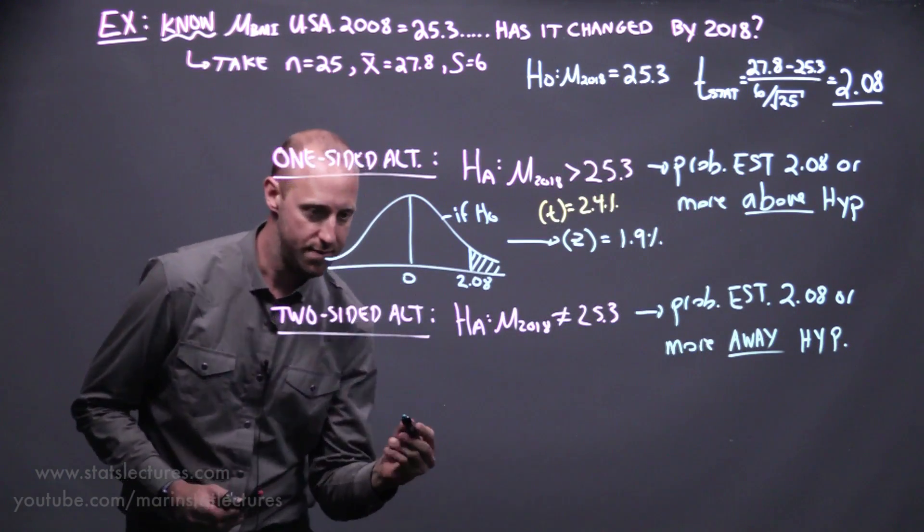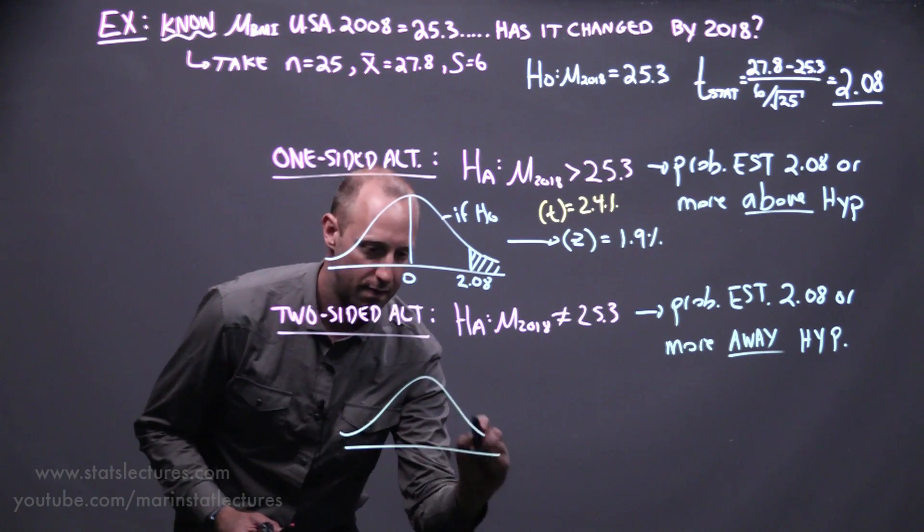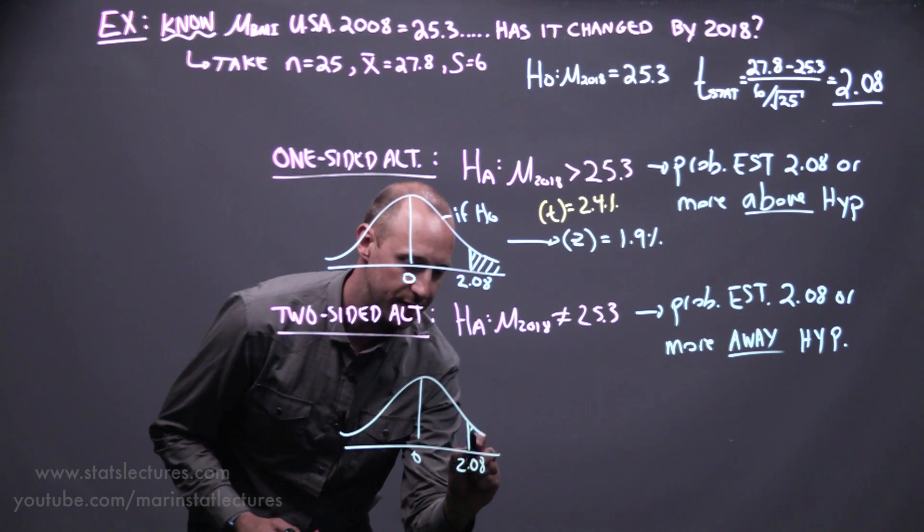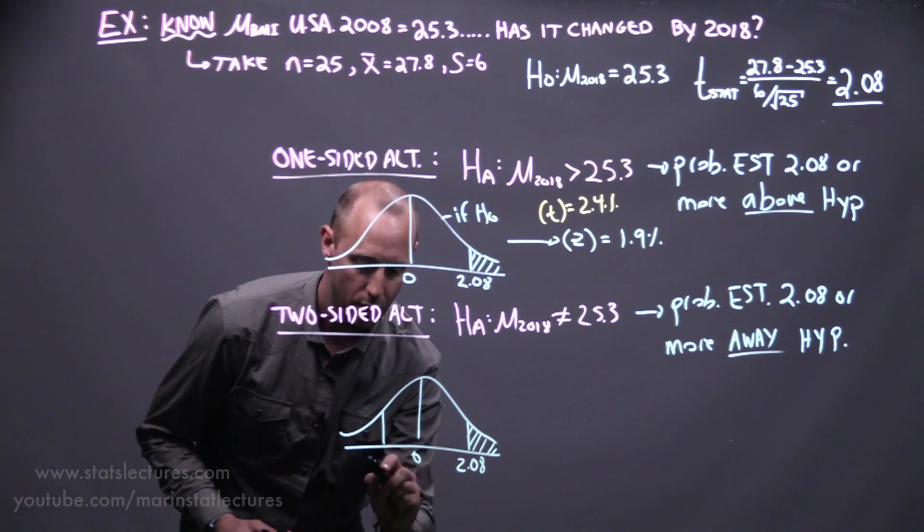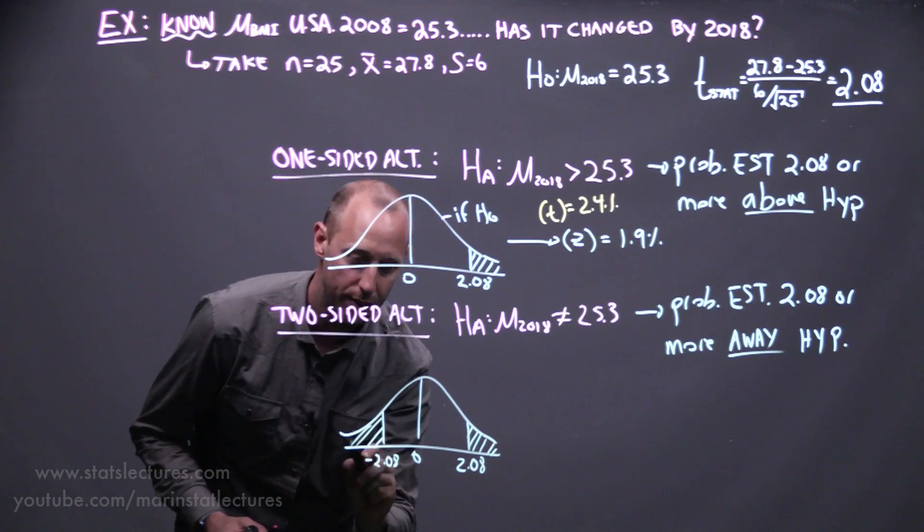So drawing that out in a picture, what's the probability of getting an estimate 2.08 standard errors or more above or 2.08 standard errors or more below the mean?